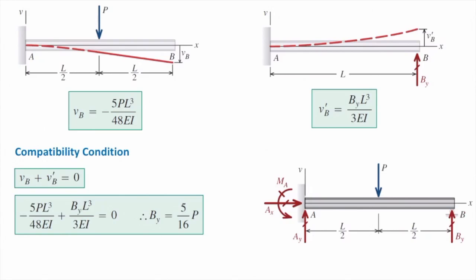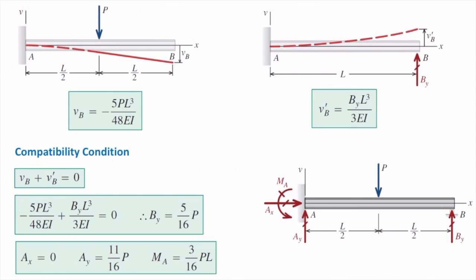For instance, the sum of forces in the Y direction equals zero, so A-y plus B-y equals P. Since B-y is 5/16 P, A-y would be 11/16 P. The sum of forces in the X direction equals zero, so A-x equals zero. Taking the sum of moments about A equals zero gives B-y times L minus P times L/2 equals zero, from which we can determine M-A. So these are the values for A-x, A-y, and M-A.